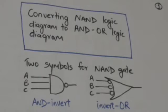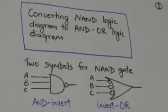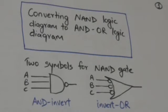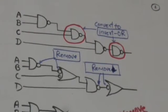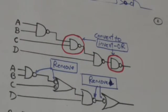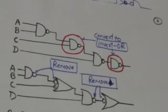Double complementation restores the original value, because the complement of complement restores the original value — so we can remove pairs of circles along the same line. Additionally, circles that go to external inputs will also be removed and the corresponding input variables will be complemented. This will be more clear after the example. Now, here is a NAND logic diagram that we need to convert into an AND-OR logic diagram.